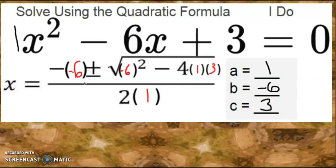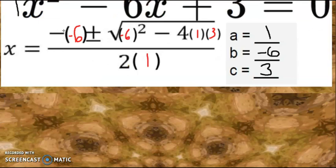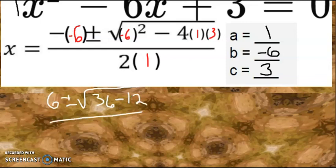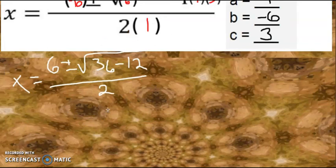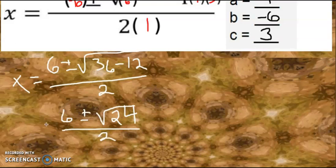Let's simplify. Negative times negative is a positive. We have 6 plus or minus—negative 6 times negative 6 is 36 minus 4 times 1 is 4, 4 times 3 is 12—all over 2 times 1, which is 2. Let's simplify further: 36 minus 12, we have the square root of 24. And rewrite everything else.